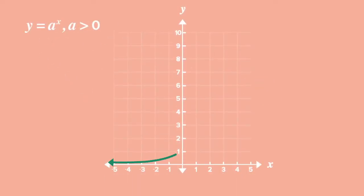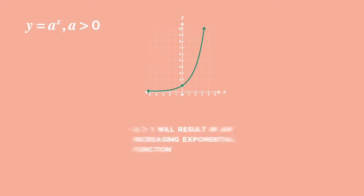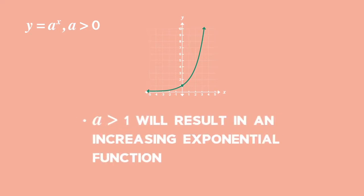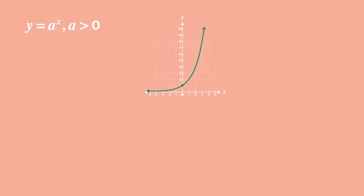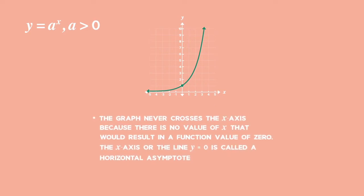There are some important points to recall about exponential functions. The base a is always greater than zero, and all values of a greater than one will result in an increasing function. The function y equals a to the power of x is always positive. This means that there is no value of x that would cause the graph to take on negative values. The graph never crosses the x-axis because there is no value of x that would result in the function value of zero.